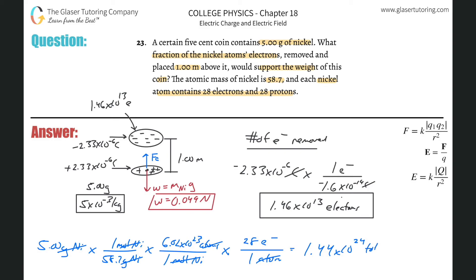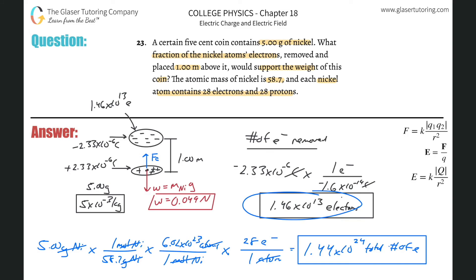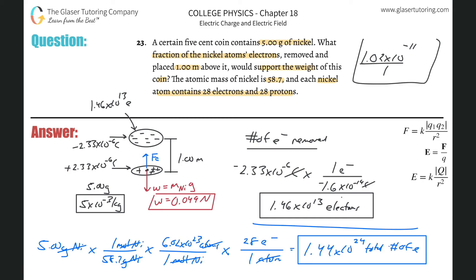Now we divide the electrons removed by the total electrons present: 1.46 times 10 to the 13th divided by 1.44 times 10 to the 24th. This works out to be 1.02 times 10 to the minus 11. So only a tiny fraction — about 10 to the minus 11 — of the nickel's electrons need to be removed.